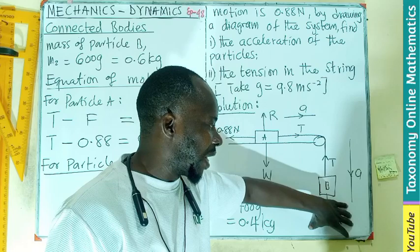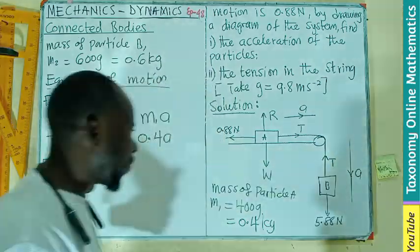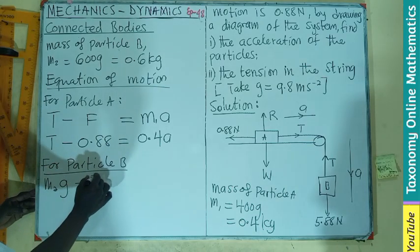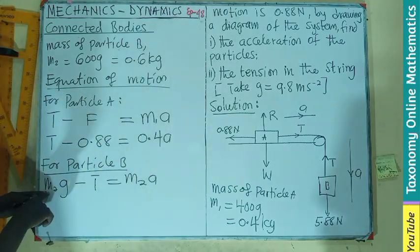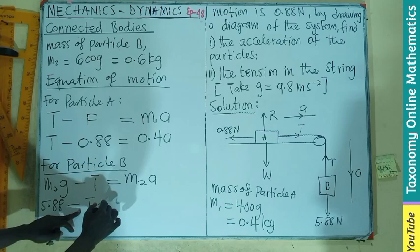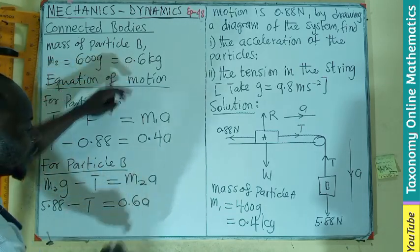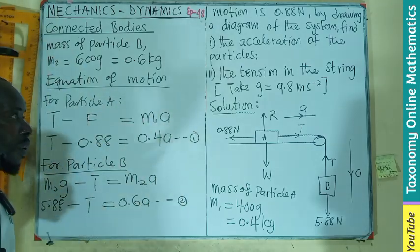For particle B, we are also going to look at the movement. The acceleration is going down. As it is moving down, we are going to take the weight minus the tension equals the force applied. So I'm going to have m2g minus the tension equals m2a.